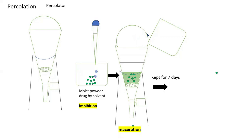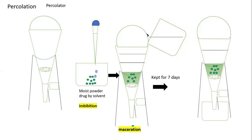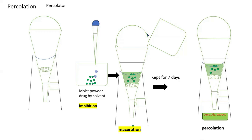The three parts of percolation are: imbibation, maceration, and now the third — percolation. After keeping it for seven days, open the knob and all the liquid droplets come out from the bottom of the percolator. Here we use alcohol as the solvent, so an alcoholic extract is collected. The percolator is mostly utilized for preparing tinctures — tinctures being concentrated alcoholic solutions.